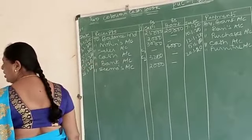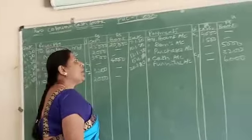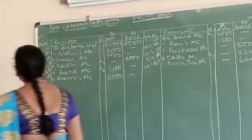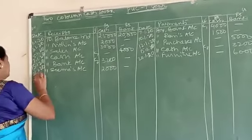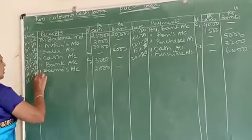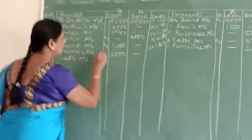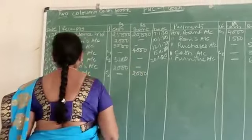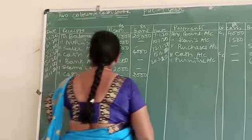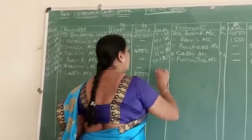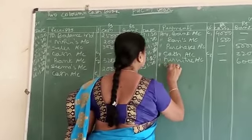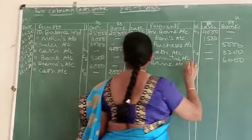SEMA check deposited into bank — it is a contra entry. Bank account debit, cash account credit. Come to the debit side, in the bank column, 2,000. The date is 21st; whatever is the amount, take the same. Come to the credit side, write by bank account in the cash column, 2,000.